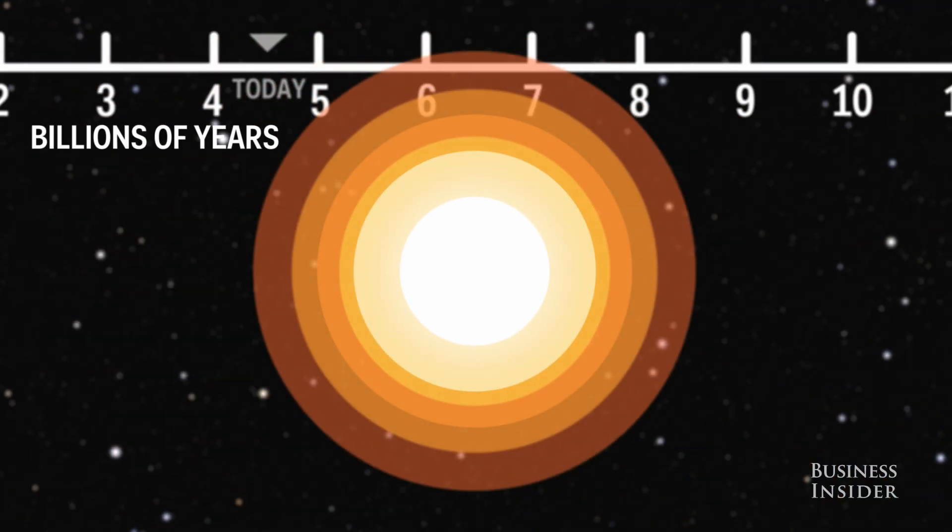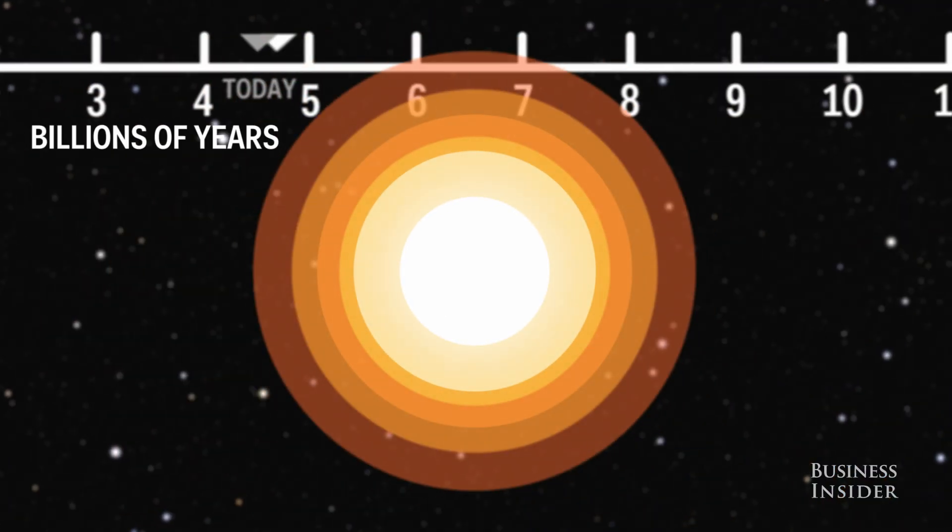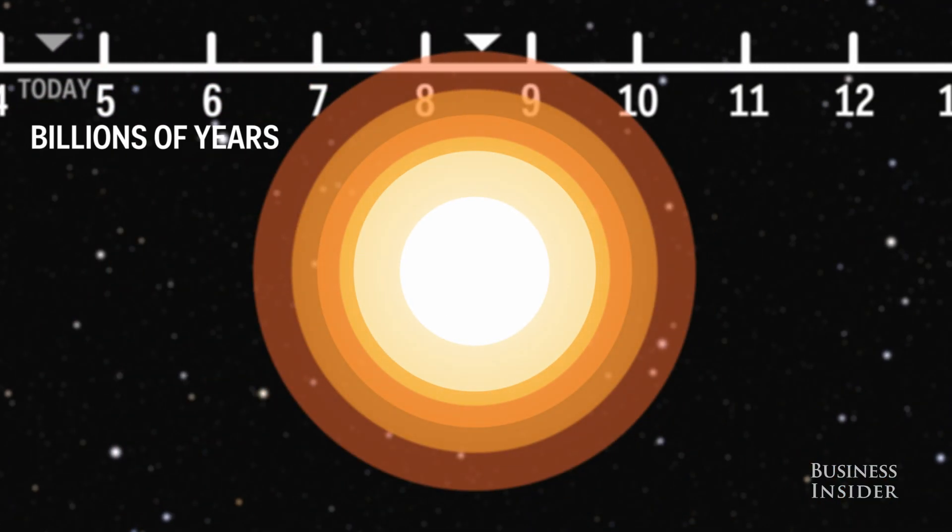However, there is only a finite amount of hydrogen in the core of the Sun. For the next 4 billion years, the Sun will continue to fuse hydrogen to make helium. As more helium builds up, the core will shrink. As a result, nuclear fusion reactions accelerate. Faster fusion means more energy output.